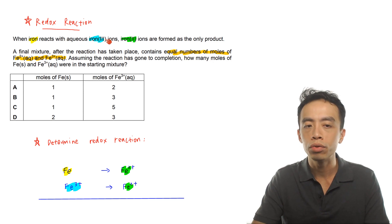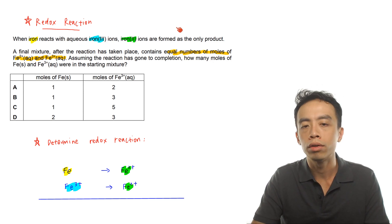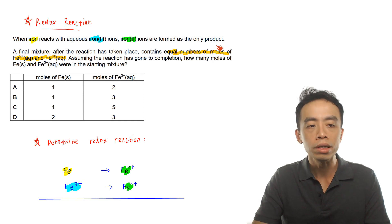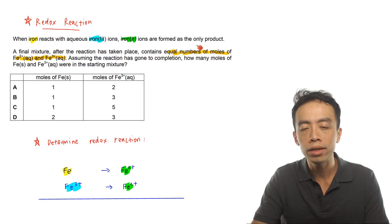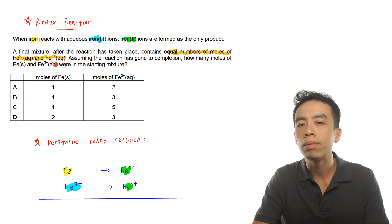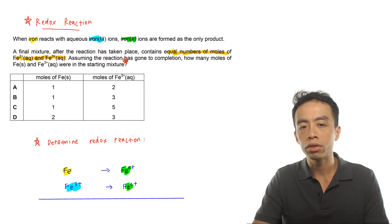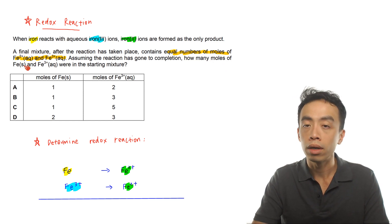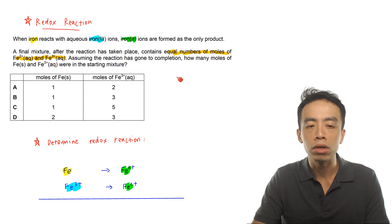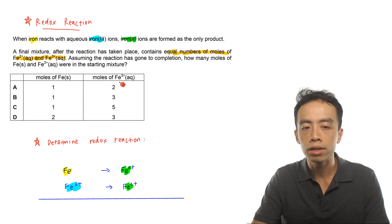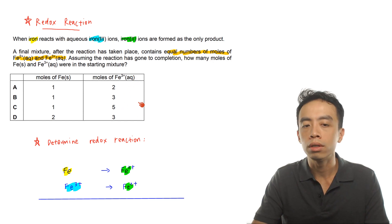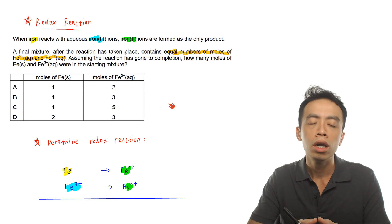When iron reacts with iron 3+ ions, iron 2+ ions are formed as the only product. We have an instance where a final mixture after the reaction has taken place contains equal numbers of moles of iron 2+ and iron 3+. Assuming the reaction has gone to completion, how many moles of iron metal and iron 3+ ions were in the starting mixture? We are given four options with different permutations of moles of iron metal versus moles of iron 3+ ions.